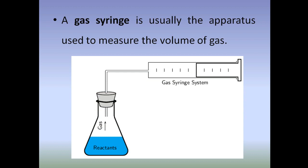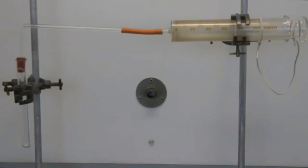Next: volume of gases. A gas syringe is usually the apparatus used to measure the volume of gas. As shown in this picture, the gas syringe is connected with an apparatus in which the reaction is taking place. If the product is a gas, then the volume of gas produced can be measured in the gas syringe.